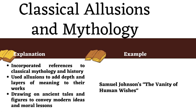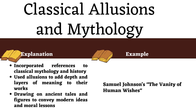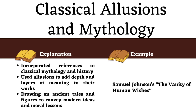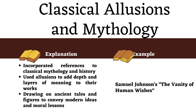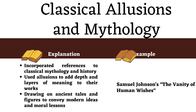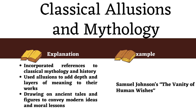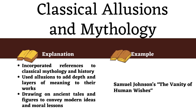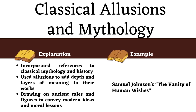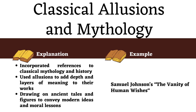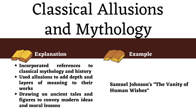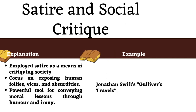Classical allusions and mythology: neoclassical literature frequently incorporated references to classical mythology and history. Authors used these allusions to add depth and layers of meaning to their works, often drawing on ancient tales and figures to convey modern ideas and moral lessons. Samuel Johnson's The Vanity of Human Wishes seamlessly weaves classical references throughout the poem to illustrate the timeless and universal nature of human desires.